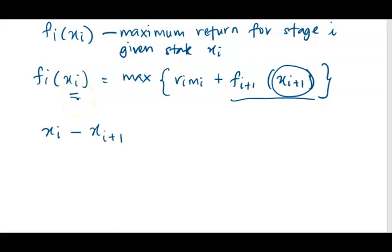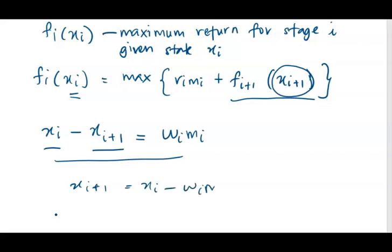By definition, x_i minus x_{i+1} represents the weight used at stage i. For example, if the total weight assigned to x_i is 5 kg and from the previous stage you have already used 3 kg, then we have a remaining of 2 kg. This 2 kg can be used to decide how many units of item i we should choose, and this equals w_i * m_i, where m_i is the number of units of item i and w is the individual weight of item i.